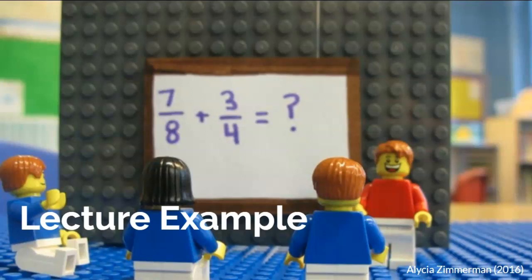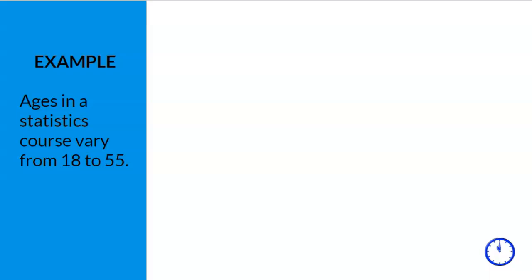Now that we've reviewed the rules and steps, let's practice with an example. We need to create a frequency table that organizes and summarizes the ages in a statistics course. The ages vary from 18 to 55. Do we want a frequency table with rows from 18 to 55? Probably not. Step 1: calculate rows using the formula — 55 minus 18 plus 1 equals 38. A regular frequency table would have 38 rows. That's way too big, so clearly we need a grouped frequency table.